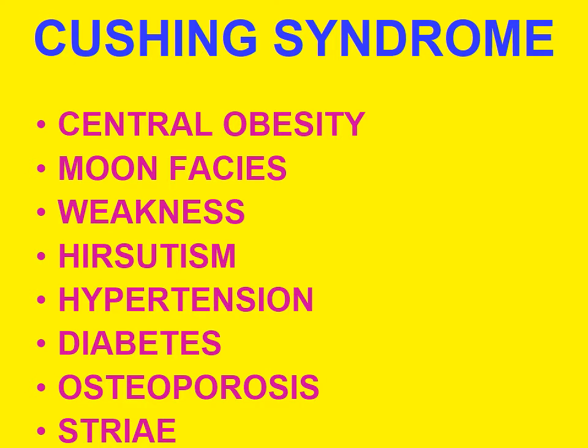Cushing syndrome clinically is characterized by adipose tissue redistribution, central obesity, buffalo hump — accumulation of fat on the back of the neck — and moon facies. Atrophy of type 2 fibers results in decreased muscle mass and proximal muscle weakness. The patient also presents with hypertension, hyperglycemia, glycosuria, and poor wound healing, with abdominal striae due to catabolic effects on collagen.